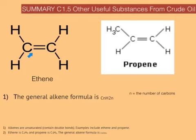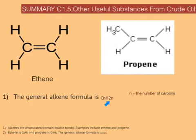So for ethene, which has two carbons, the general formula is C2H4, because two times two equals four. For propene it is C3H6, because two times three equals six — and you can count six hydrogens on the diagram to prove it.